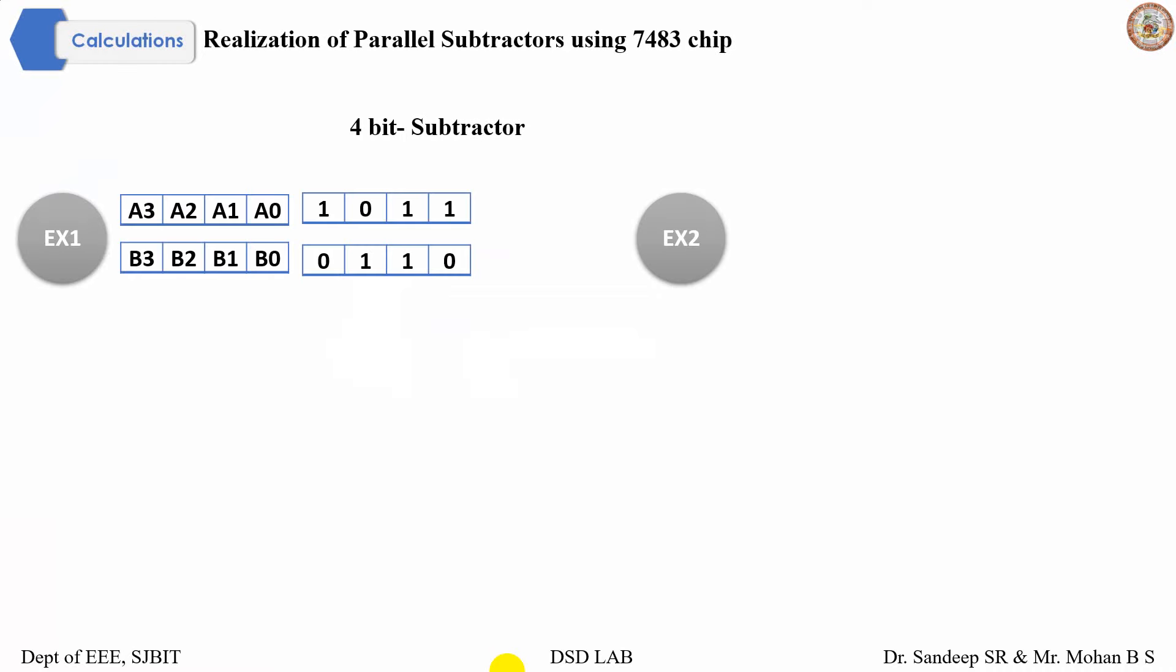Let's take one example here. If the two 4-bit inputs are in two rows specified here for A and B, let's take complement of the minuend - that is for B3, B2, B1, B0. This is the complement of the input.